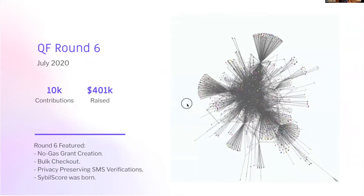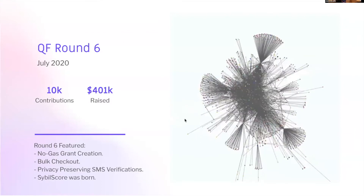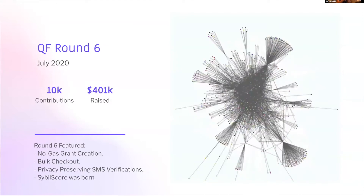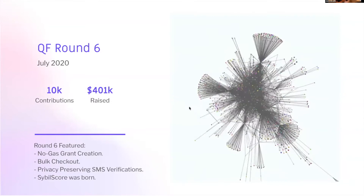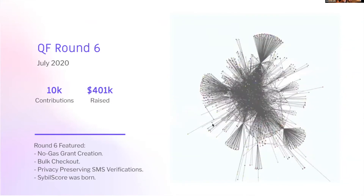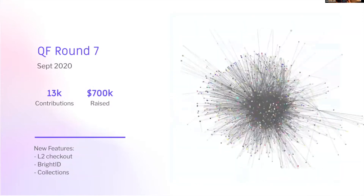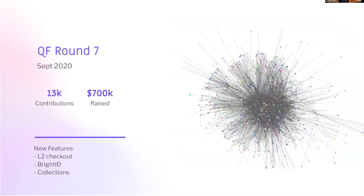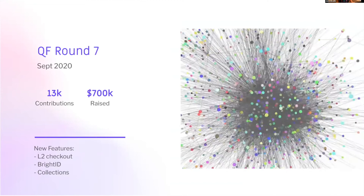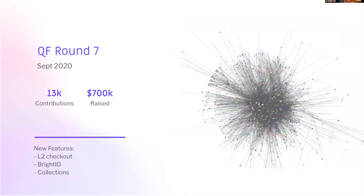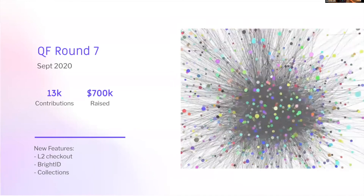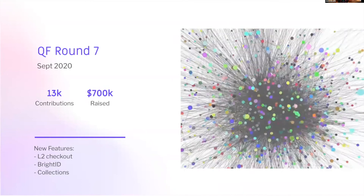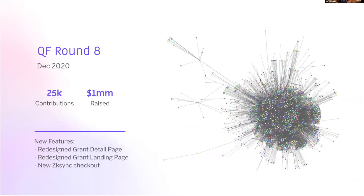In round six, we created a tool called bulk checkout, which allowed you to add a bunch of grants to cart and check out up to 40 of them at a time — a really important part of the user experience for getting people to contribute to more grants. Round seven was the introduction of layer two, a cheaper payment mechanism for Gitcoin Grants. The average contribution is a dollar, and moving from layer one to layer two allowed very cheap transactions to all grants.